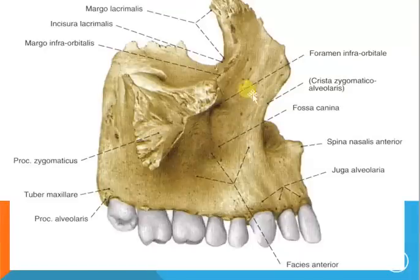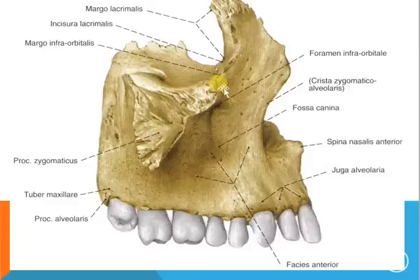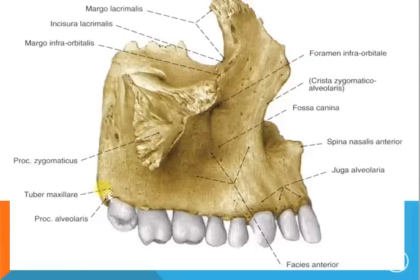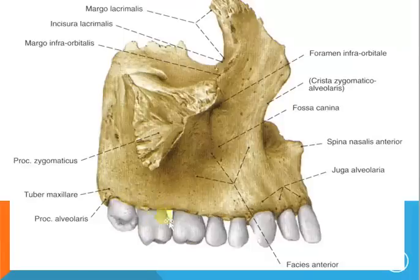Another view of the maxilla, with the margo lacrimalis shown here. This is called the incisura lacrimalis. The margo infraorbitalis — margo means margin — is the infra-orbital margin that makes the lower border of the orbit. This is the processus zygomaticus. Another important landmark is the tuber maxillae, which for the dentist is a really important landmark. And this is the processus alveolaris, which houses the upper teeth.